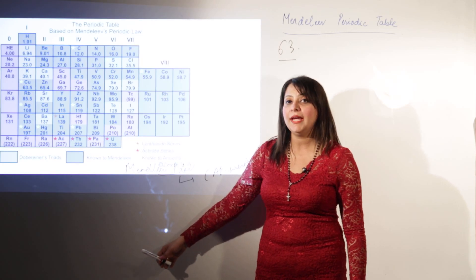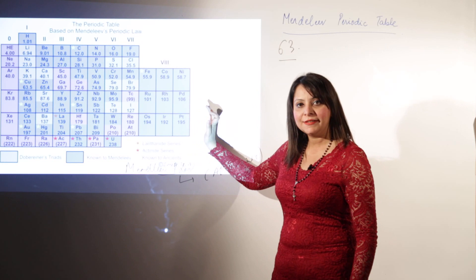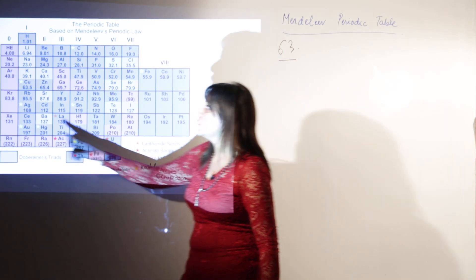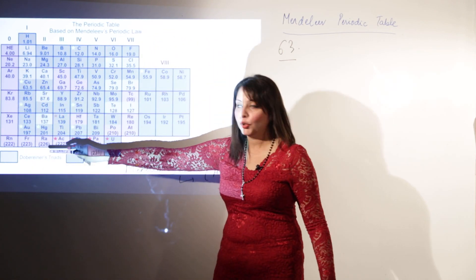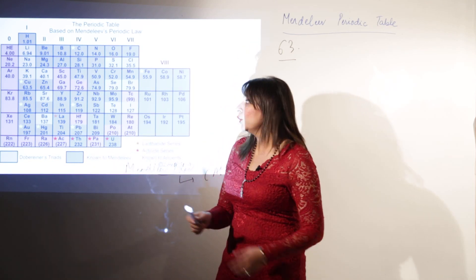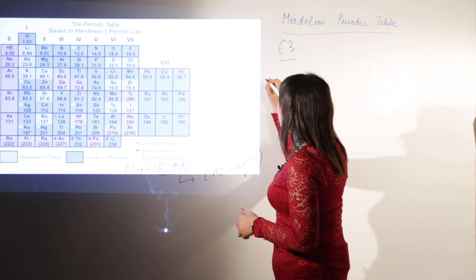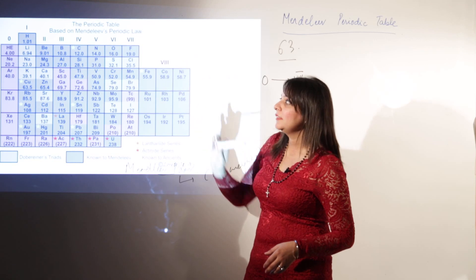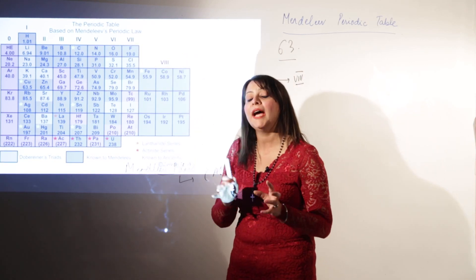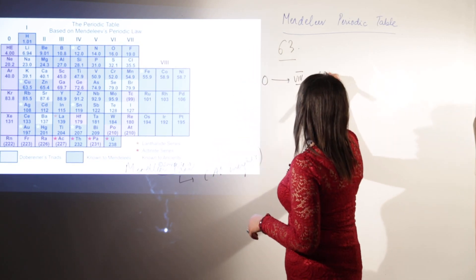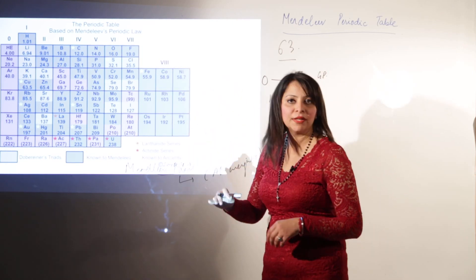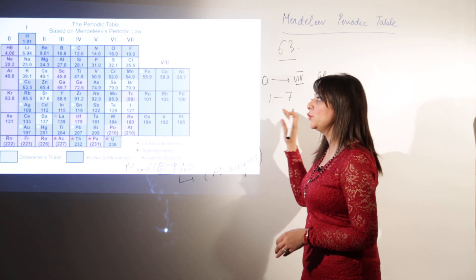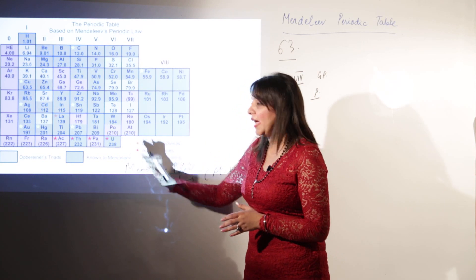Mendeleev's periodic table comprised vertical columns called groups and horizontal rows called periods. There were nine groups in total, numbered zero to eight in Roman numerals. There were seven periods. So the table consisted of groups numbered zero to eight and periods numbered one to seven, classifying 63 elements in this tabular form.